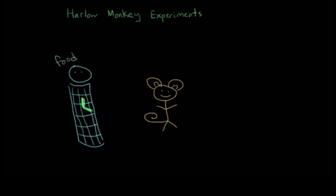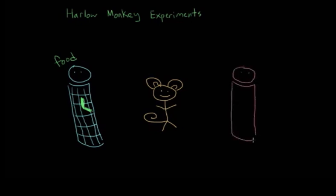The second mother in the cage was referred to as the cloth mother. This mother was the same size and shape as the wire mother, but instead of having exposed chicken wire, it had a soft cloth blanket wrapped around it. So this mother is the mother that can provide comfort.